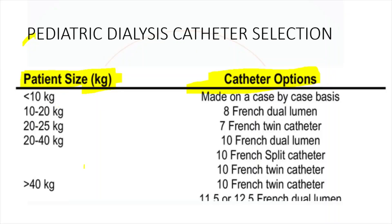Regarding periodic dialysis catheter selection, there are few references on which catheter to select. If the patient is more than 18 years or more than 40 kg, the solution is almost clear: we use either an 11.5 or 12.5 French dialysis catheter, which is ideally inserted in the jugular vein or femoral vein.